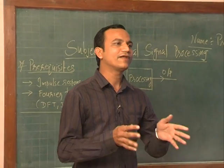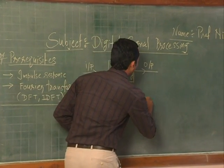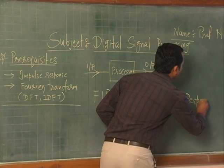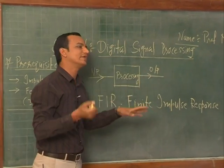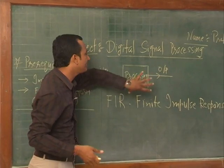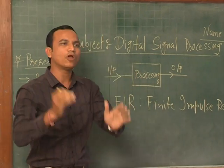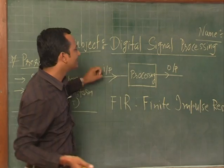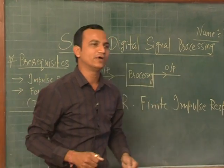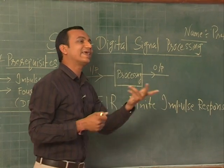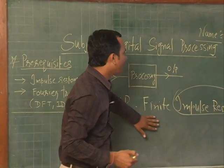F-I-R stands for finite impulse response. The name itself tells you that it has a finite impulse response. Impulse response characterizes a system — if you give an impulse signal as input and observe the output, that output is called the impulse response, which tells you how the system behaves. That's why we place great importance on impulse response.